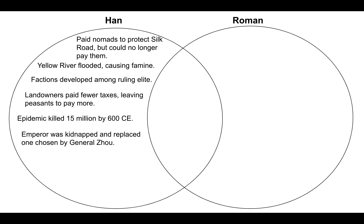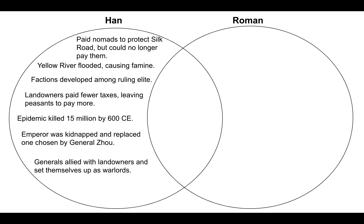The emperor actually got kidnapped and replaced by one supported by the lead general, General Zhao. Different generals became allied with different landowners and actually set themselves up as warlords in what was the Han Dynasty. That is not going to help the Han government with unification, because they're not going to be able to do anything about these warlords. And then finally, the starving peasants — starving because of famine and disease — led what was called the Yellow Turban Rebellion, and that finally ended the Han Dynasty.